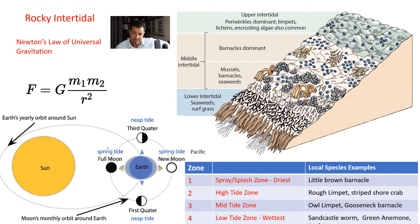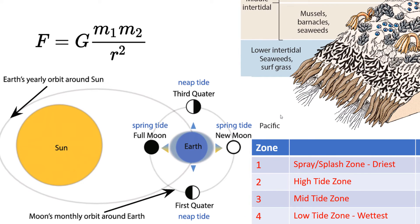Let's talk about what makes the tides happen. The tides are influenced by the sun and the moon, and we can predict them using Newton's law of universal gravitation, which states that the force or pull of objects is based on the object's size and their distance from one another. We have three big players: the earth, the moon, and the sun. The moon has the largest impact on the tides. It takes about a month for the moon to go all the way around its orbit around the earth.